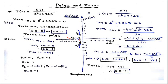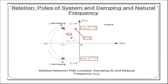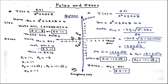Regarding the location of poles and zeros: if values contain no imaginary part, they lie on the real axis; if they contain no real part, they lie on the imaginary axis; if complex, they lie in the s-plane. The important characteristic is that closed-loop poles of a system should always lie on the left side of the s-plane for the system to be stable. If poles lie in the left half of the s-plane, the system is stable.